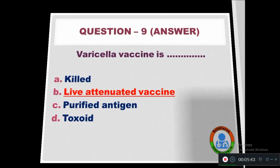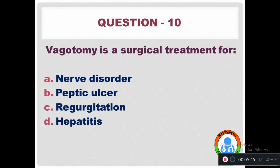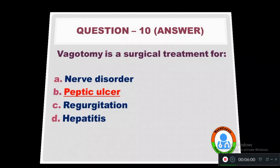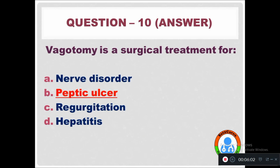Question 10: Vagotomy is a surgical treatment for — Option A: Null disorder. Option B: Peptic ulcer. Option C: Regurgitation. Option D: Hepatitis. The right answer is that vagotomy is a surgical treatment for peptic ulcer disease.